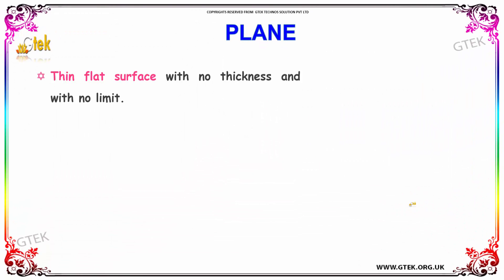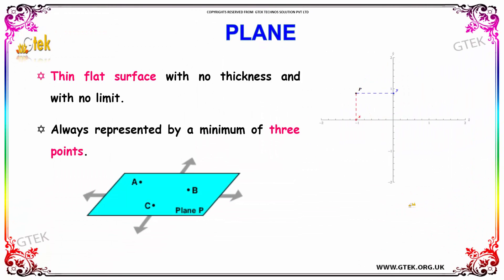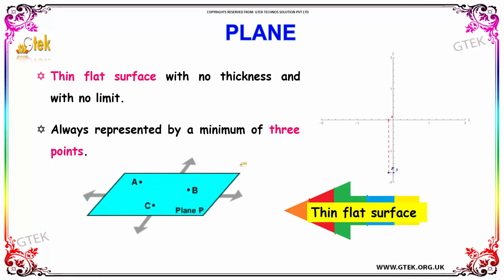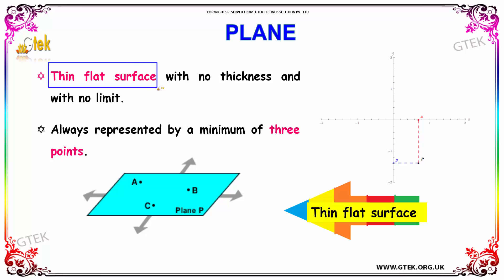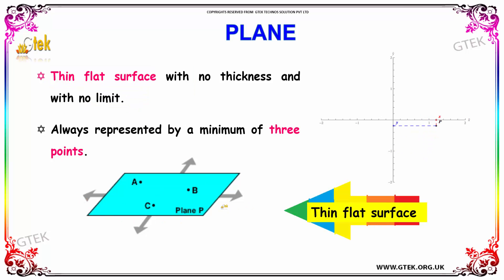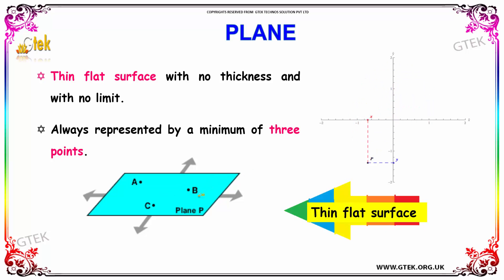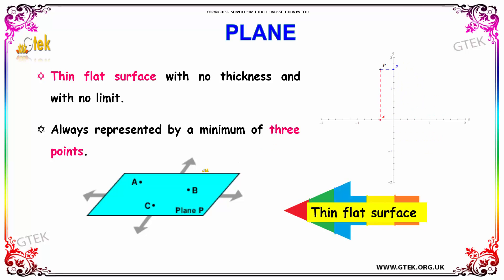What is a plane? A plane is a thin flat surface which has no thickness and no limit. As you can see, a plane is flat and does not have any thickness or limit. It is always represented by a minimum of three points — here we have three points A, B, and C.